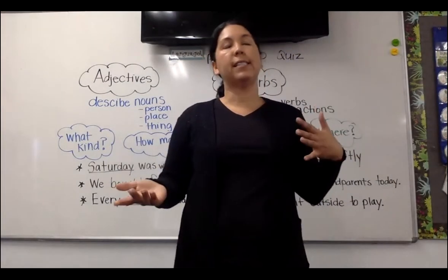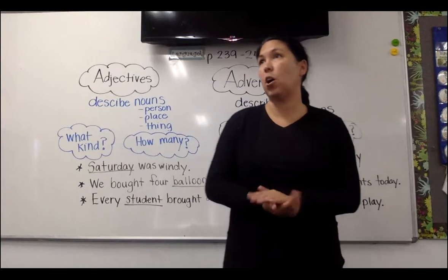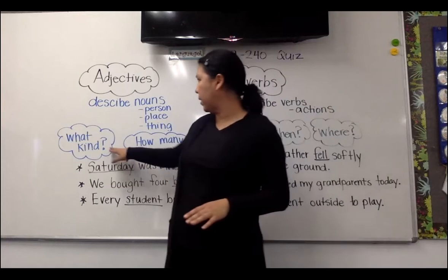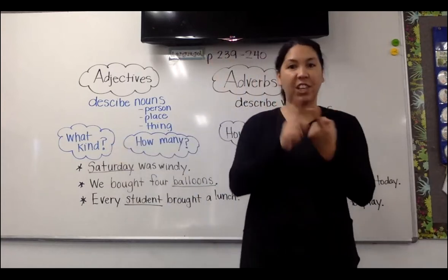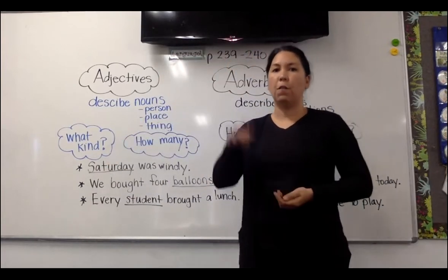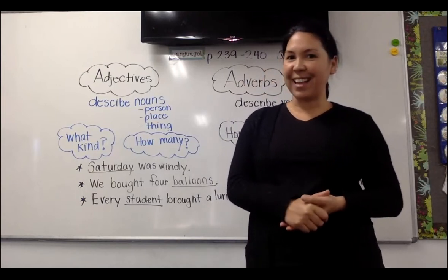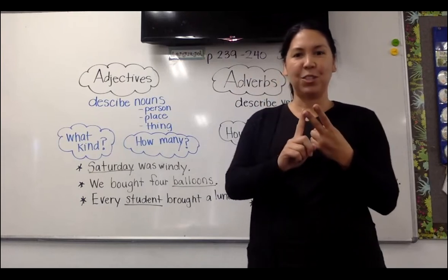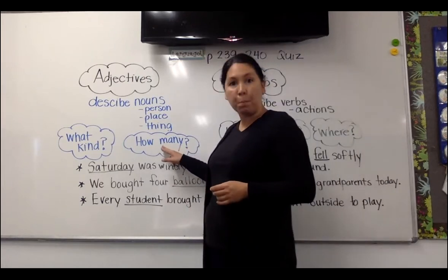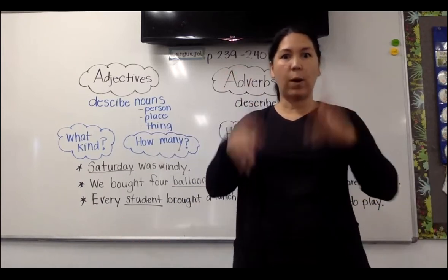If I'm saying a sentence like, 'the cute tan dog ran down the street,' what words were describing my dog? He was cute — that's what kind of dog he was. And he was tan colored. What if I said, 'four cute tan dogs ran across the street'? What are my adjectives in that sentence? Well, we still have cute and tan, but did you hear how many dogs there were? There were four dogs. Remember that numbers are adjectives too. So whenever you see a number, it's always an adjective. Don't think twice about it.